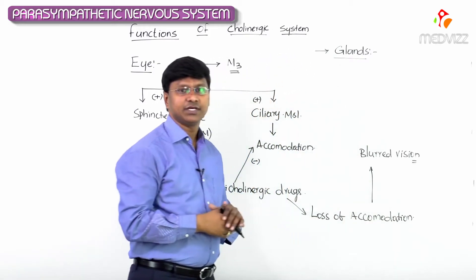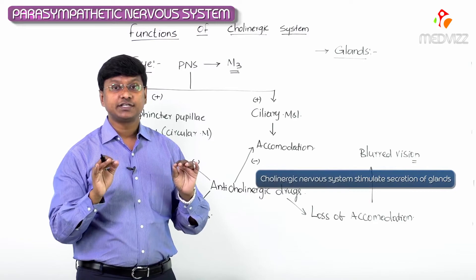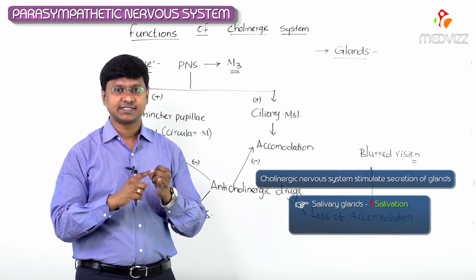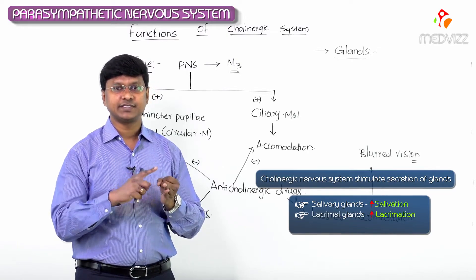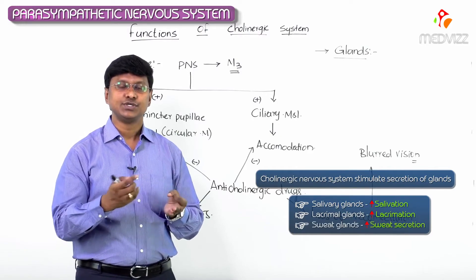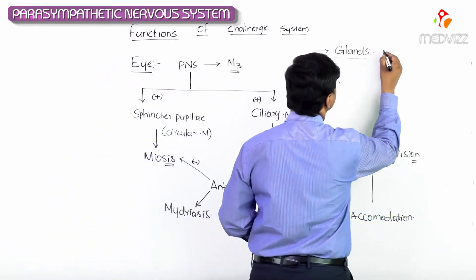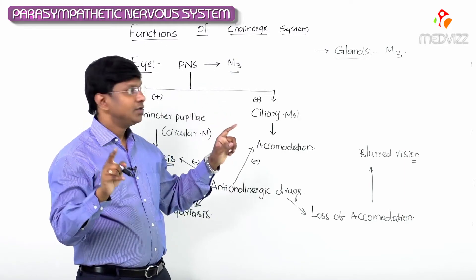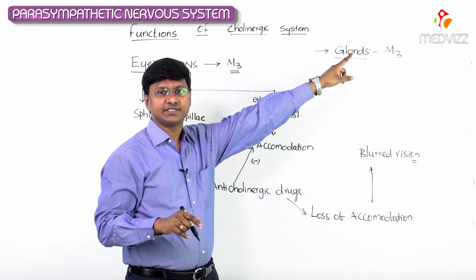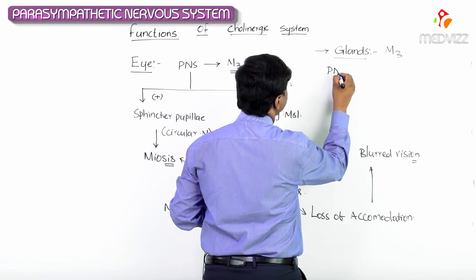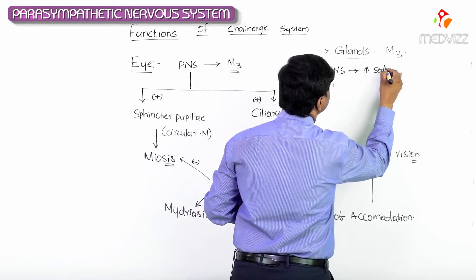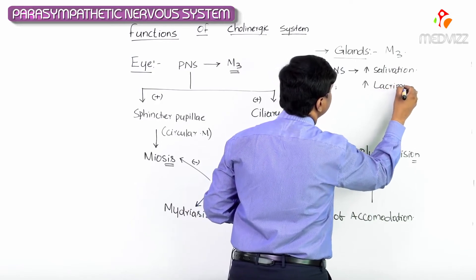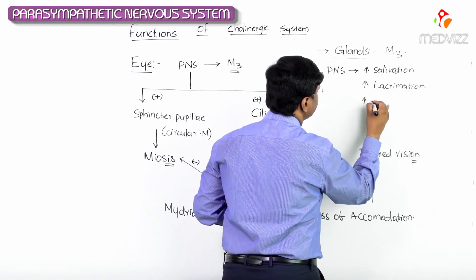Now let's take up the effect on the glands. The cholinergic nervous system will stimulate the secretion of all the glands — it will stimulate the salivary glands to increase salivation, the lacrimal glands to increase lacrimation, and the sweat glands to increase sweat secretion. This action is via M3 receptors, so the parasympathetic nervous system acts on the glands via M3 receptors, thereby increasing salivation, lacrimation, and sweating.